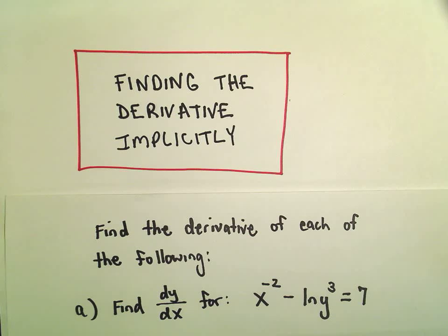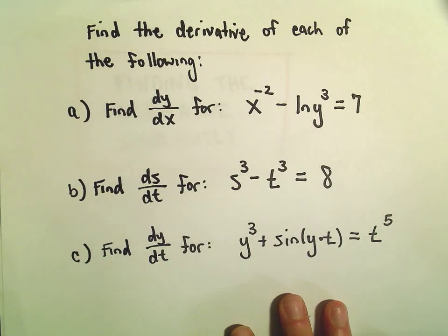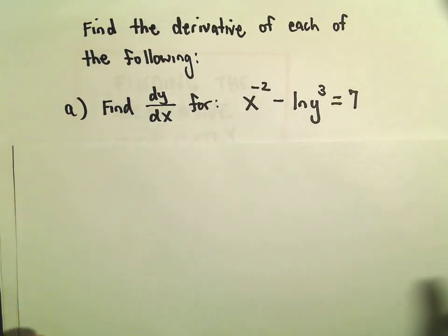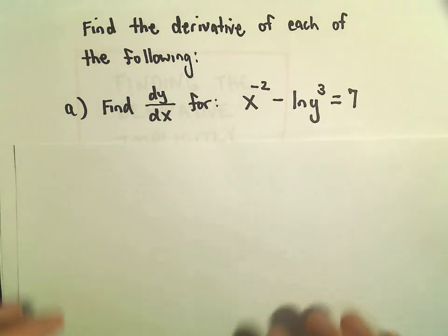In this video, we're going to look at some more examples involving implicit differentiation. In part A here, we're going to find the derivative for x to the negative second minus ln of y to the third equals 7.